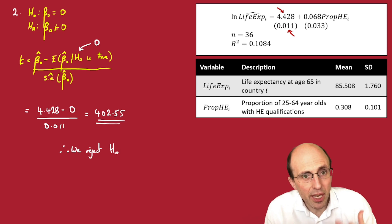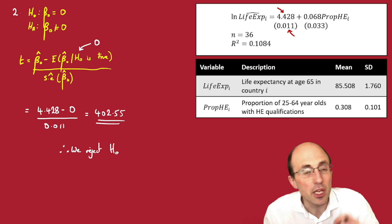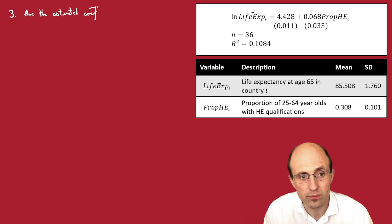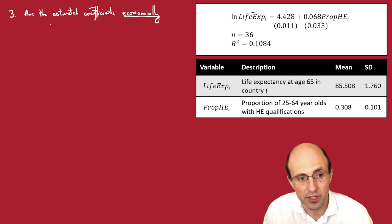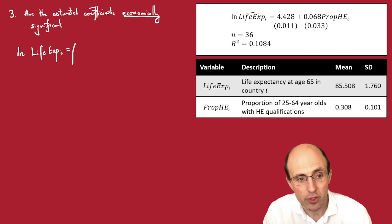That covers whether the estimated coefficients are statistically significant. But what about economic significance — are the estimated coefficients large? We're going to focus on the slope parameter. The first part is to understand what the estimated coefficient actually means. We estimated: ln(life expectancy) = β0 + β1 × (proportion with higher education) + u.